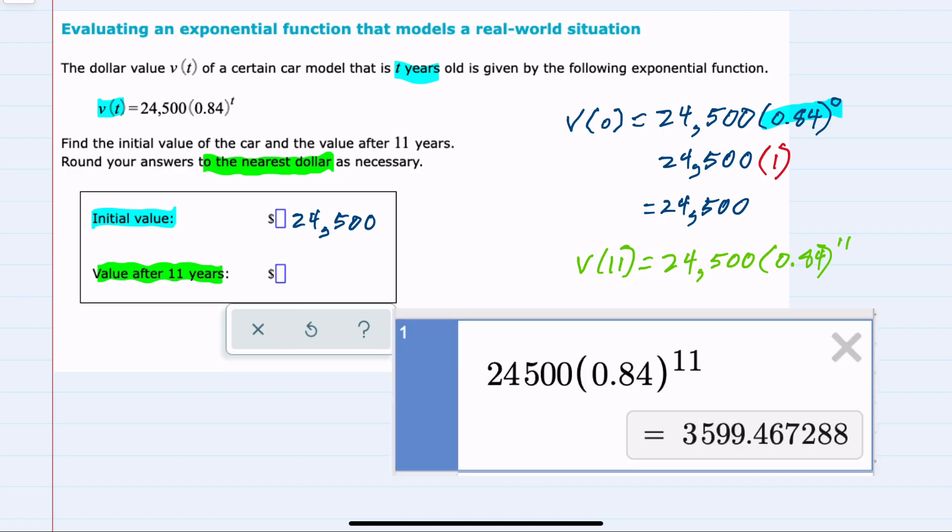To do this calculation, I use Desmos, putting in 24,500 times, then opening a parenthesis, 0.84, closing that parenthesis, using the caret so that the exponent is only going to apply to what's in the parenthesis.